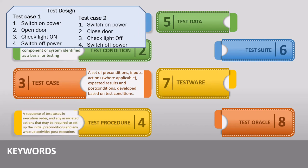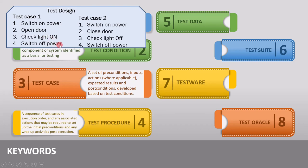The next keyword is test procedure, defined as a sequence of test cases in execution order and any associated actions that may be required to set up the initial preconditions and any wrap-up activities post execution. This term is used mostly in manual testing, where you decide in which order test cases are to be executed, or if any preconditions or post conditions are required. For example, after test case one is executed, the door shall be closed and light switched off. For test case two, during the initial condition, the door should be open and light must be on so that we can see the change.